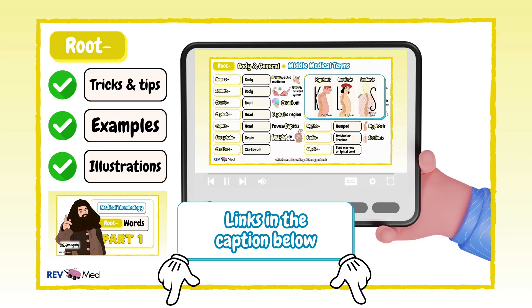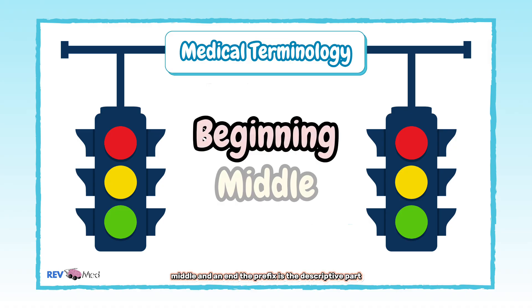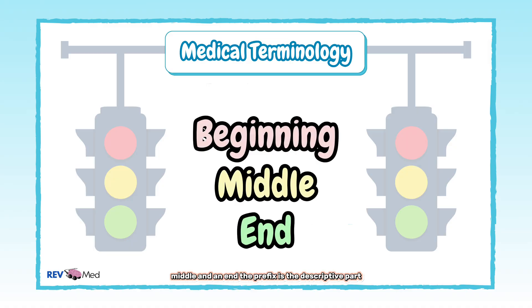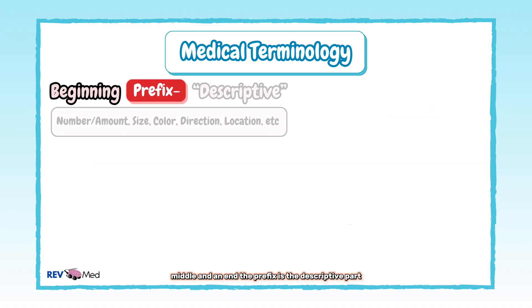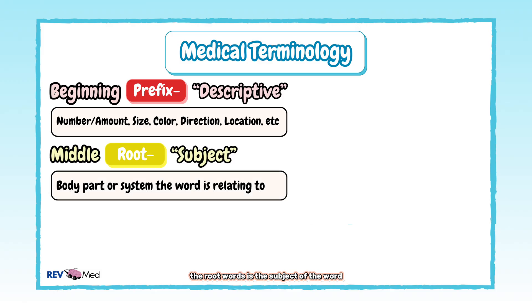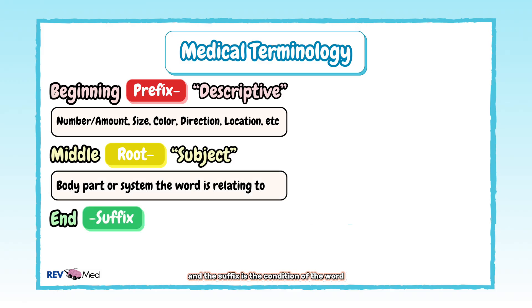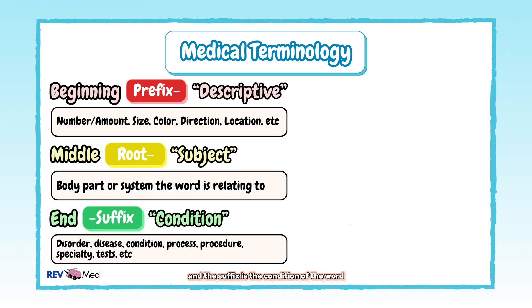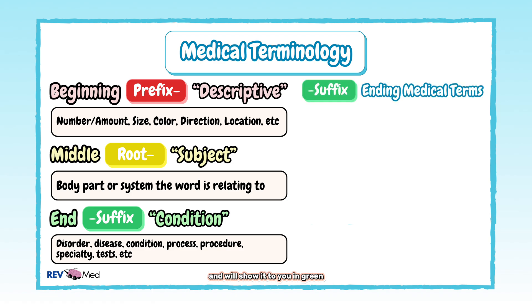We listed them all out. Before we begin, we'll do a quick little recap. Medical terms have a beginning, middle, and an end. The prefix is the descriptive part, which we showed you in red. The root word is the subject of the word, which was shown in yellow, and the suffix is the condition of the word. This is what gives the term meaning, and we'll show it to you in green.